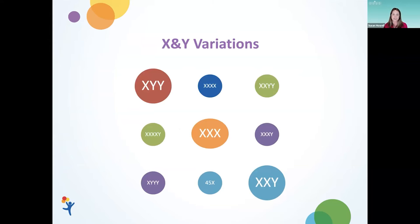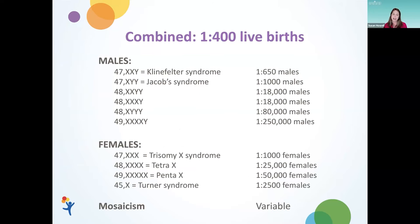When we talk about X and Y variations, the trisomies tend to be more common, represented by a larger circle in this picture, but we also see tetrasomies of many different varieties, as well as 49ers having 4XY. Collectively, these conditions are relatively common — approximately 1 in 400 live births is affected with a sex chromosome aneuploidy, the most common being Klinefelter syndrome at 1 in 650. The tetrasomies tend to be more rare, and the 49ers even more so. Mosaicism prevalence is variable and there's no good reference study due to the nature of the condition.